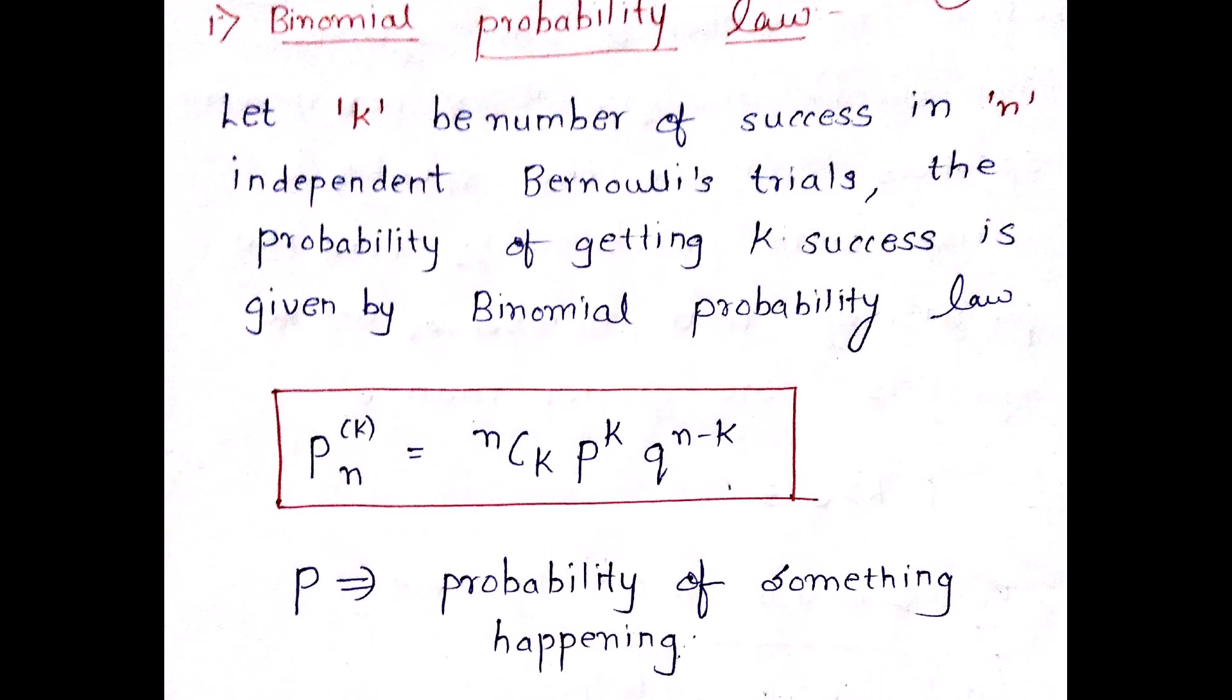So let's start with a number of successes in independent Bernoulli trials. You need not understand Bernoulli very well right now. When we are learning about different kinds of distributions, we will be understanding that. But you should understand that there are n independent trials out of which k is success.